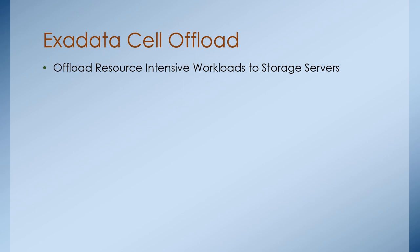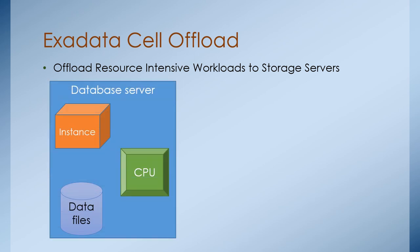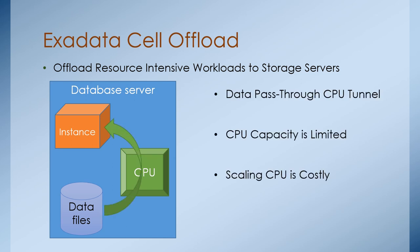So what is Exadata cell offload? In simple terms, cell offload is nothing but offloading the resource-intensive workload from the database node back to the storage node. In a conventional architecture, you have a database server hosting your instance as well as the storage mechanism, be it a file system or ASM. Whenever there is a database call, it passes through the CPU back to the storage, and then the storage reverts the data back to the database instance. The problem is the data passes through a narrow CPU tunnel, and the CPU capacity is very limited — increasing it requires a lot of cost. DBAs often encounter high CPU wait times that impact application performance.